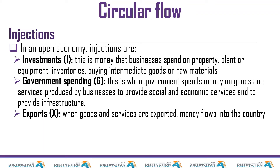The next injection is exports. When we manufacture goods here in South Africa and sell to other countries, that is an injection. We have the formula: J for injection equals I plus G plus X — investment plus government spending plus exports.